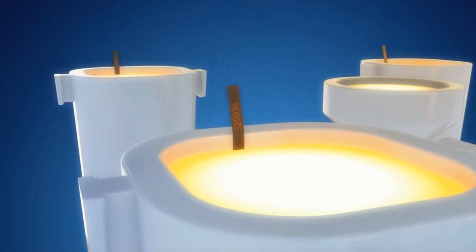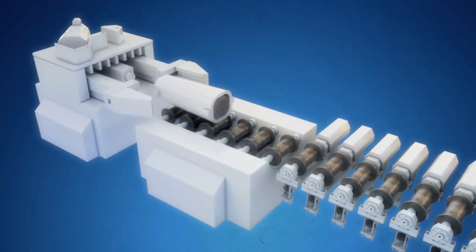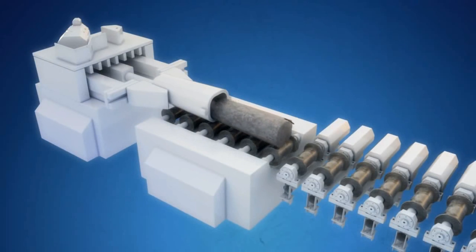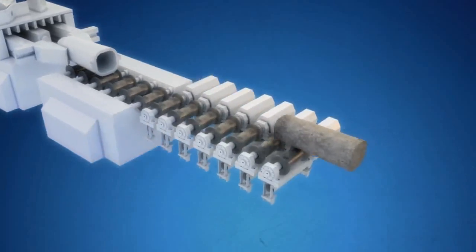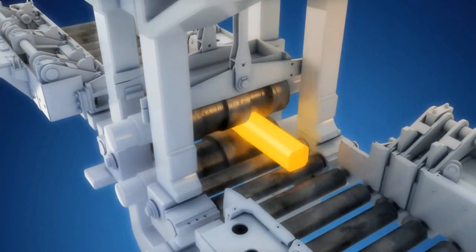Each ingot is marked with a heat number to ensure full traceability. The ingots are stripped from their molds, heated, and transported to hot working in an ingot rolling mill.